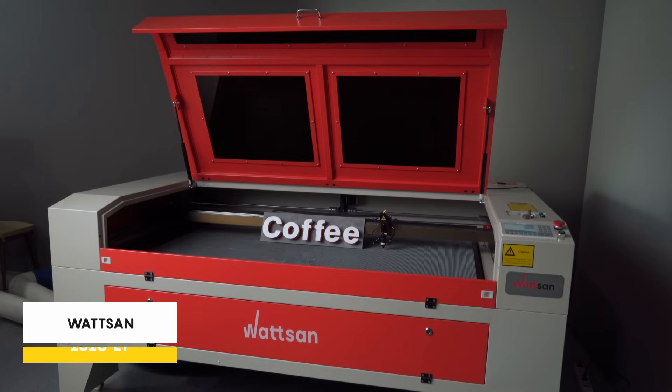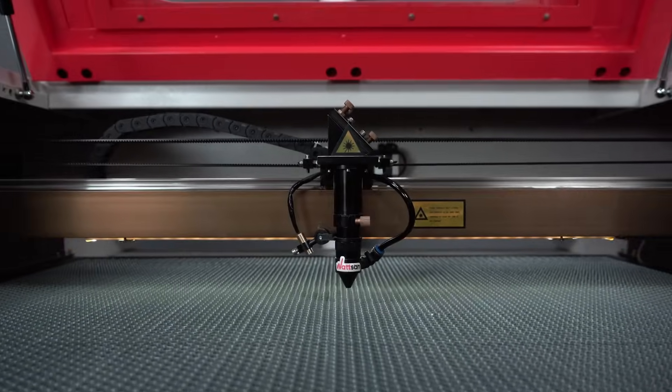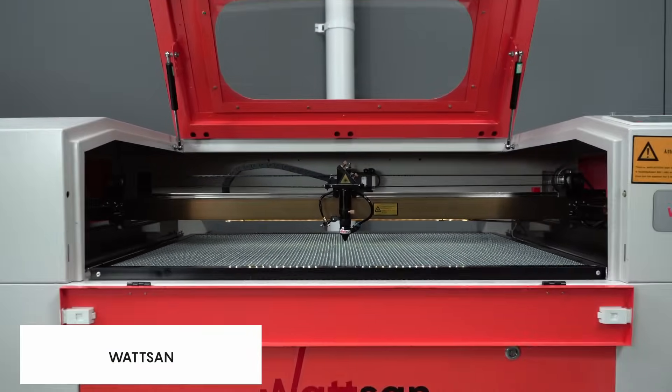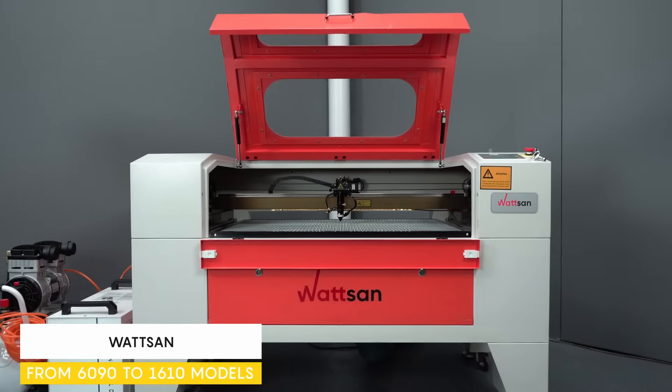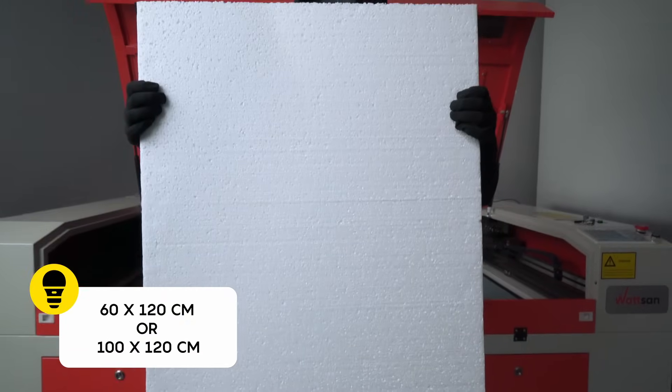For cutting, we will use a Watson 1610 LT laser machine. In general, all medium format models from 6090 to 1610 are suitable for this task, as the foam itself is often 60 by 120 or 100 by 120 centimeters.